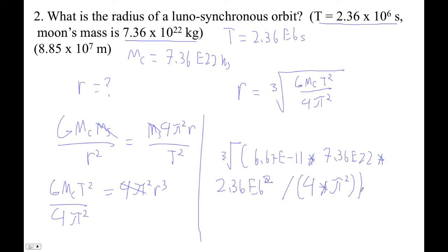So 4 times pi squared, end of the parentheses, another parentheses. Then since I can't find my cube root, I'm actually raising it to the 1/3 power, but that's okay.